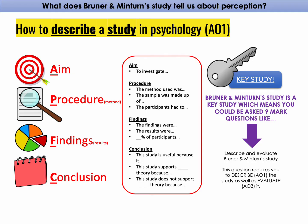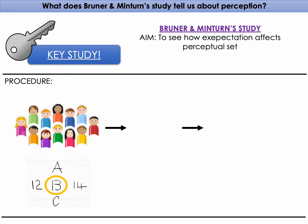Let's look at the APFC of Bruner and Minturn's study. The aim was to see how expectation affects perceptual set. The procedure consisted of showing participants an ambiguous figure — ambiguous meaning the figure is unclear. It was an independent group design where some participants were shown a sequence with the letters A and C and the ambiguous figure in the middle, while the other group was shown a sequence of numbers with the ambiguous figure in the middle.